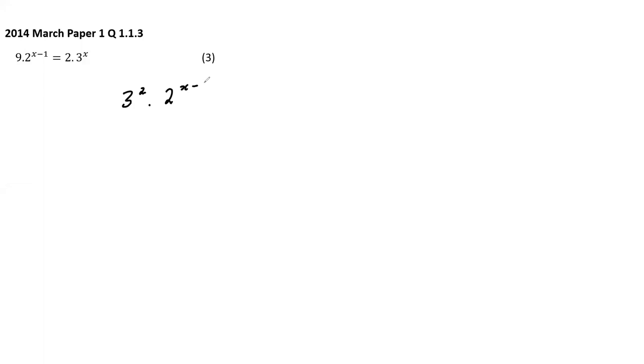Here's an interesting question from 2014 March paper, question 1.13: 9 times 2 to the power x equals 2 times 3 to the power x. Solve for x. I can change 9 to a base of 3: it becomes 3 squared times 2 to the power x minus 1 equals 2 times 3 to the power x. Notice I have base 3 and base 2 together - I can't add these powers because the bases aren't the same. So I need to separate the 2s and 3s.